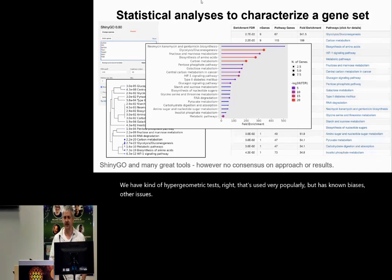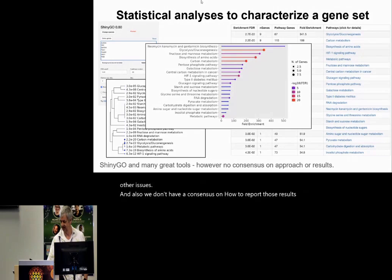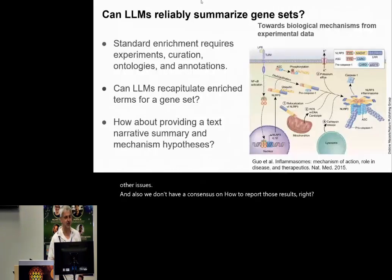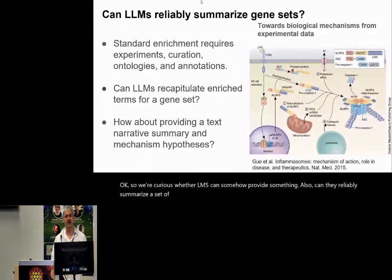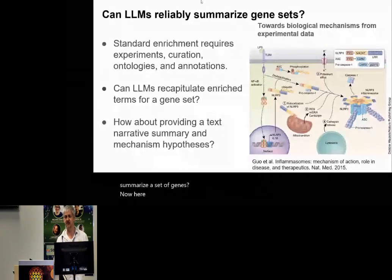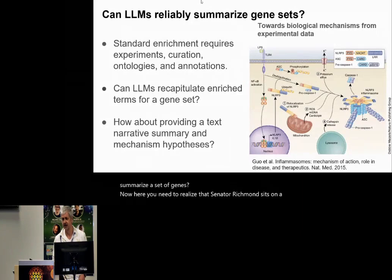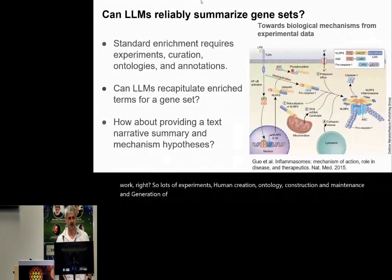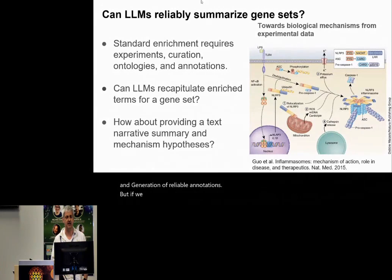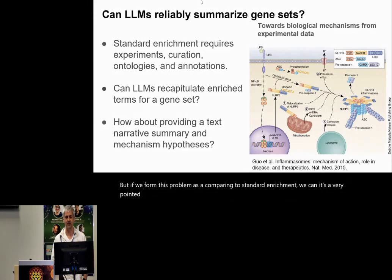We also don't have a consensus on how to report those results. So we're curious whether LLMs can somehow provide something — can they reliably summarize a set of genes? Standard enrichment sits on a pyramid of prior work: lots of experiments, human curation, ontology construction and maintenance, and generation of reliable annotations. If we frame this as comparing to standard enrichment, it's a very pointed question and we can evaluate that formally and give some metrics.